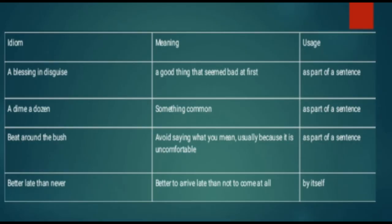'A blessing in disguise' is a very common idiom — it means a good thing that seemed bad at first sight. For example: 'I stepped out to look for something and you were a blessing in disguise — you have it with you.' 'A dime a dozen' means something common. 'Beat around the bush' means avoid saying what you mean, usually because it is uncomfortable — so don't beat around the bush, come straight to the point.